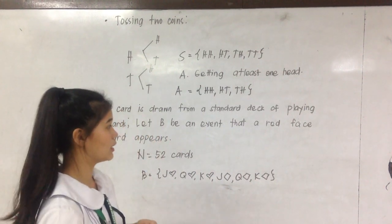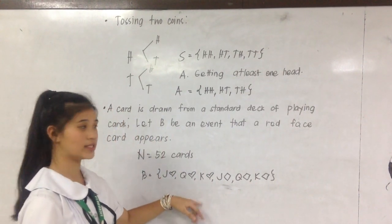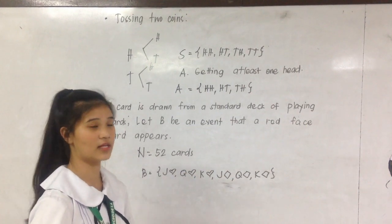So in this example, event B has the set of jack of hearts, queen of hearts, king of hearts, jack of diamonds, queen of diamonds, and king of diamonds because these are the only cards that are in red face. We'll come back for another day. Thanks, guys.